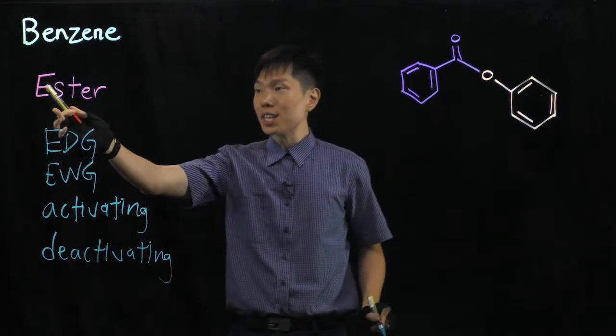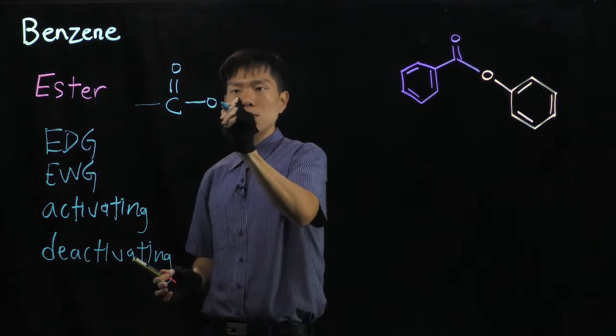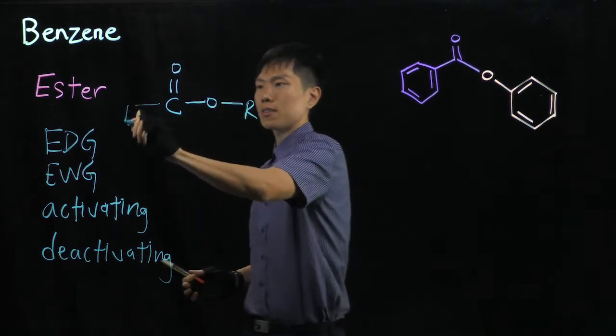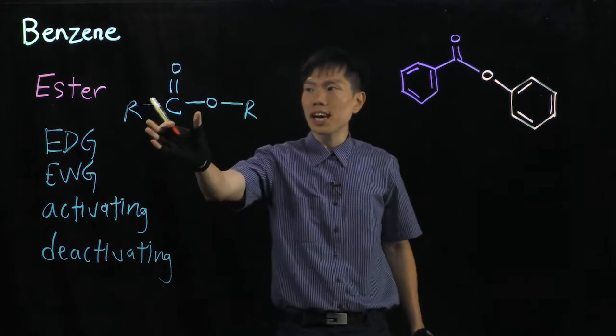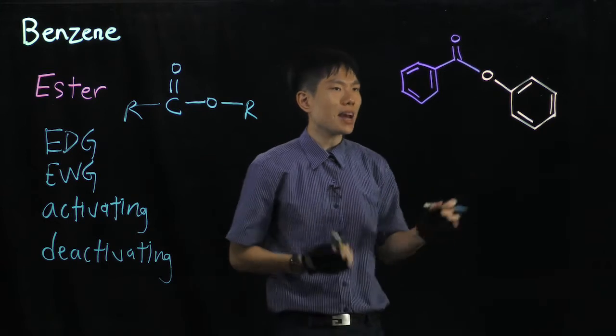So first of all, we have to understand the structure of the ester group. It has this C double bond O, CO single bond, with an R group here. And suppose in this case, the R group becomes a benzene. Let's use this molecule as a form example, then we can see it better.